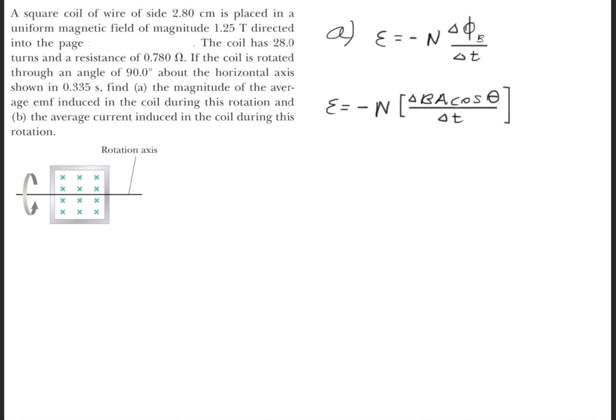Now if we expand what the change in flux is, we get that the change in flux is also equal to the change in the magnetic field times the area times the cosine of the angle between the magnetic field and the surface normal.